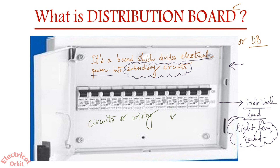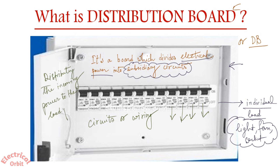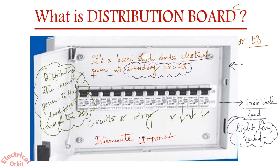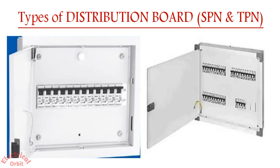There are certain rules about how much power you should bring out from each individual MCB or circuit. In simple words, the number of points coming out from these MCBs are named in the distribution system as sub-main wiring or circuit wiring — those are the subsidiary circuits from the main supply system. This is possible when we distribute the incoming power to load points through DBs. So a DB is an intermediate component in the distribution system to properly manage your system.